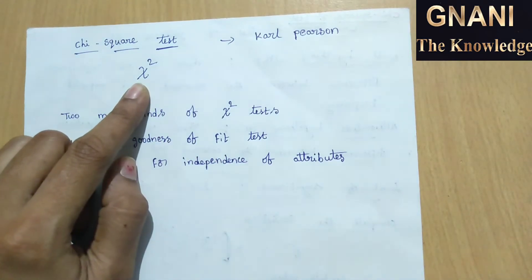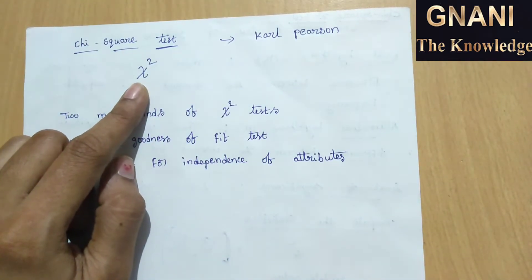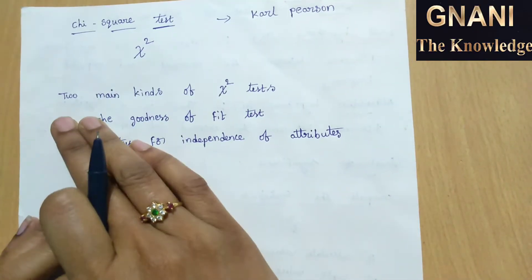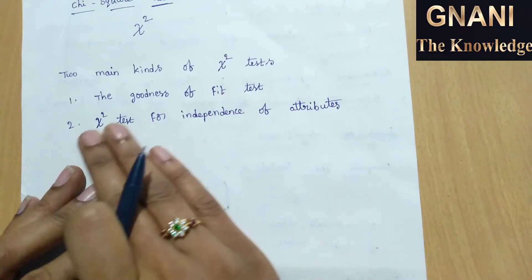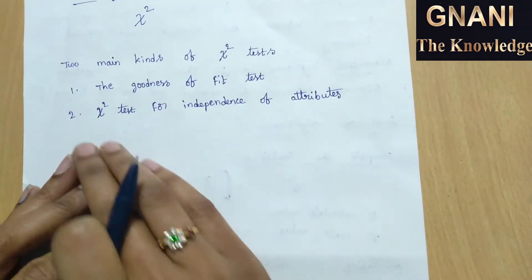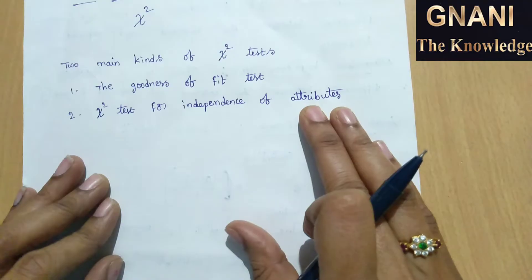Initially the chi-square test was developed by Carl Pearson. The two main kinds of chi-square tests are the goodness of fit test and chi-square test for independence of attributes.